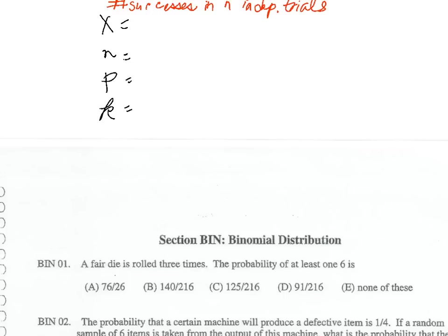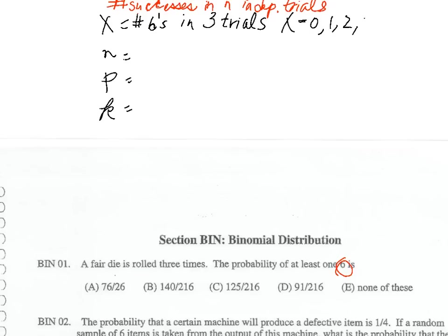What is x for this problem? We're rolling a die three times and we're trying to find sixes. Six is actually our success. So x is the number of sixes in three trials — x can be zero, one, two, or three. How many times are we going to look? Three times. What's the chance? That's what p is.